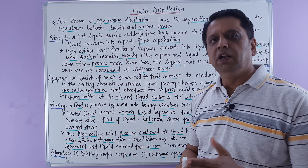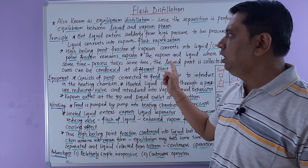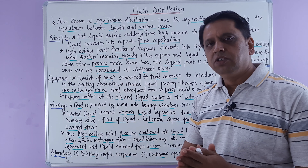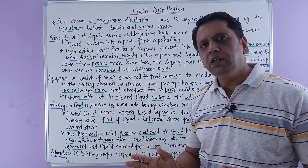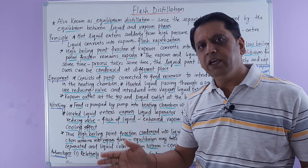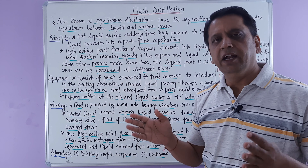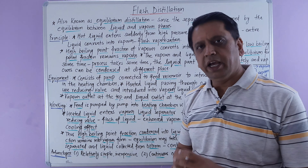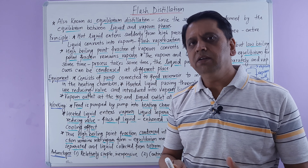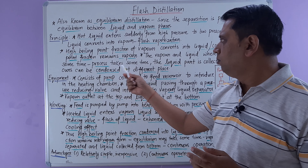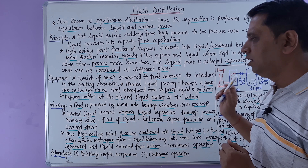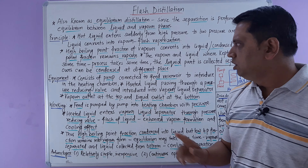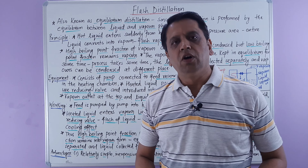In flash vaporization, the high boiling point fraction of the vapors will condense into liquid very soon, but the low boiling point fraction remains in vapor form. In this way, the liquid and vapor — that is, the high and low boiling point fractions of any feed — can be separated. The vapors and liquid are kept in equilibrium for some time, then the liquid part is collected separately and the vapors are condensed at a different place.